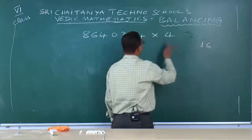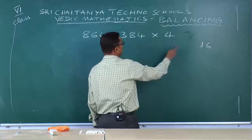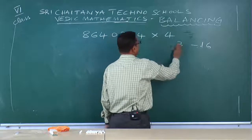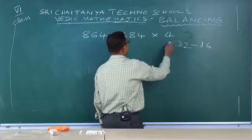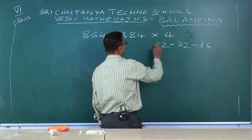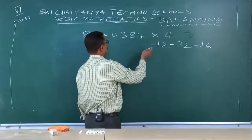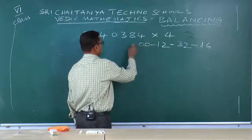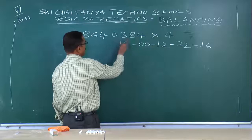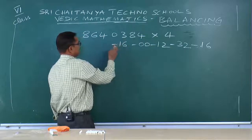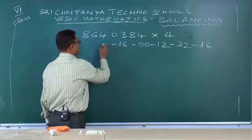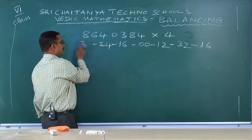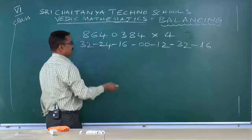4 into 4: 16. 4 into 8: 32. 4 into 3: 12. 4 into 0: 00. 4 into 4: 16. 4 into 6: 24. 4 into 8: 32.